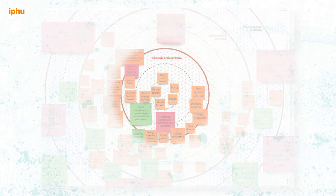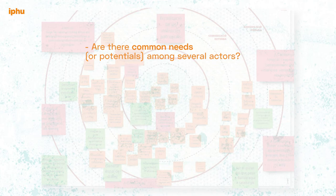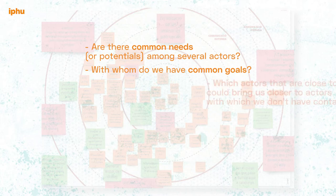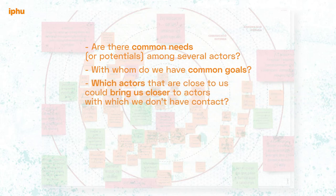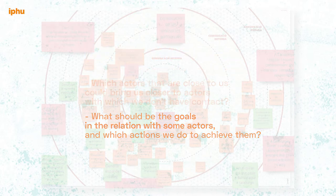Once we have actors organized, we can think of different aspects: are there common needs or potentials among several of these actors? With whom do we have common goals? Which actors close to us could bring us closer to actors we don't have contact with yet? And what should be the goals in the relation with some actors, and which actions do we take to achieve these goals?